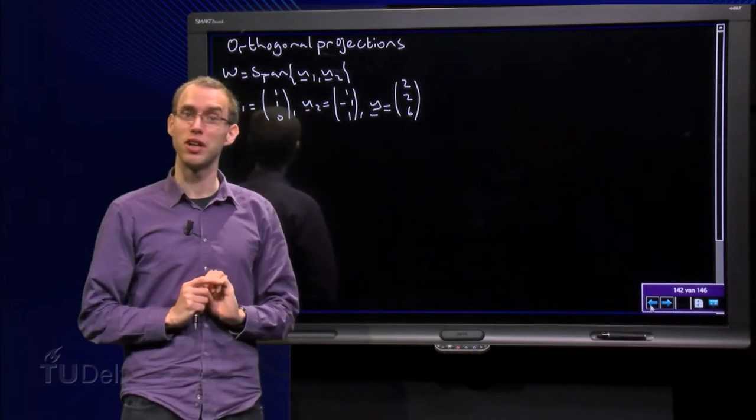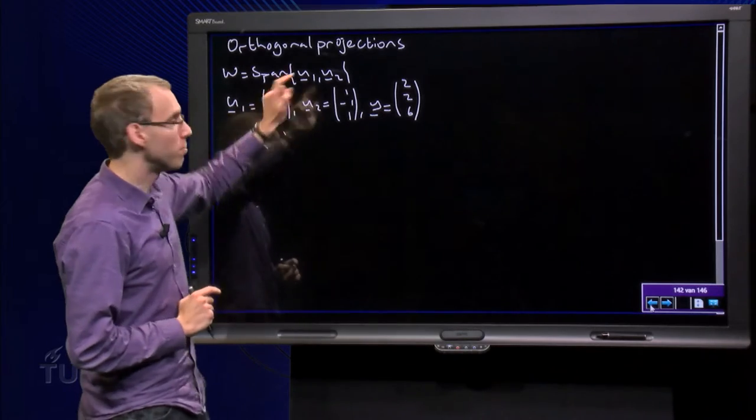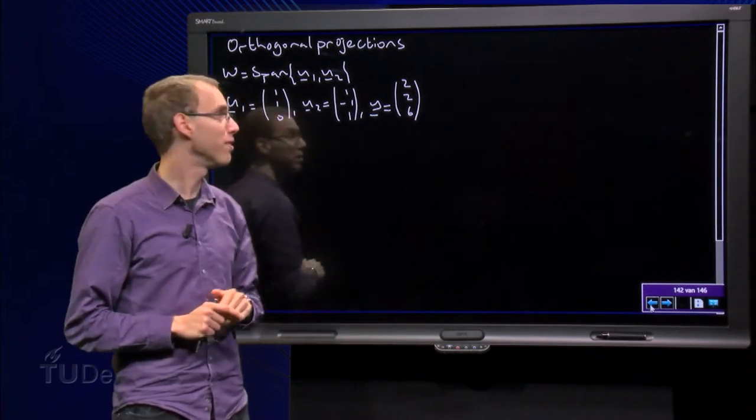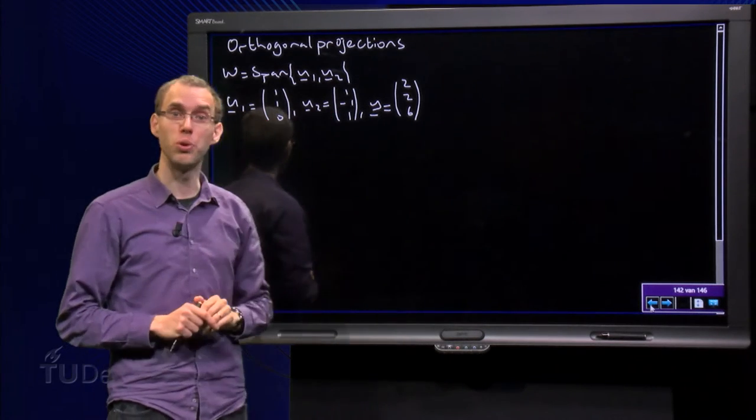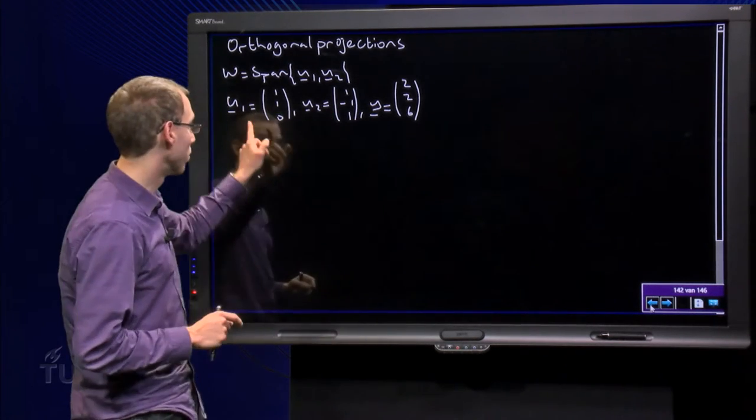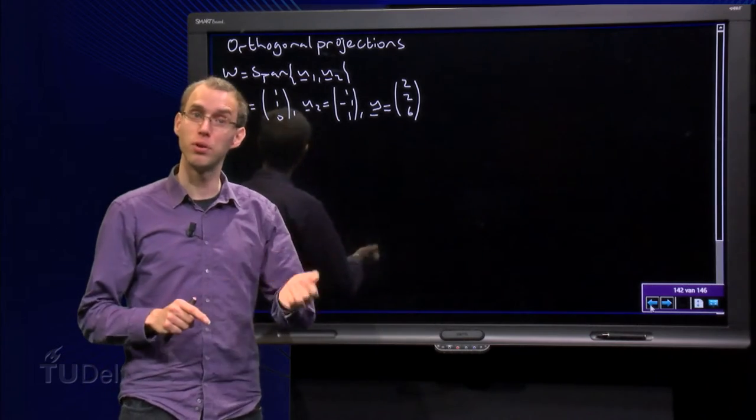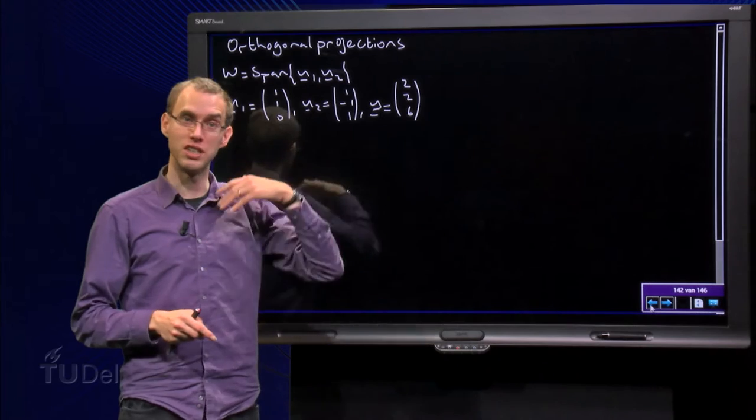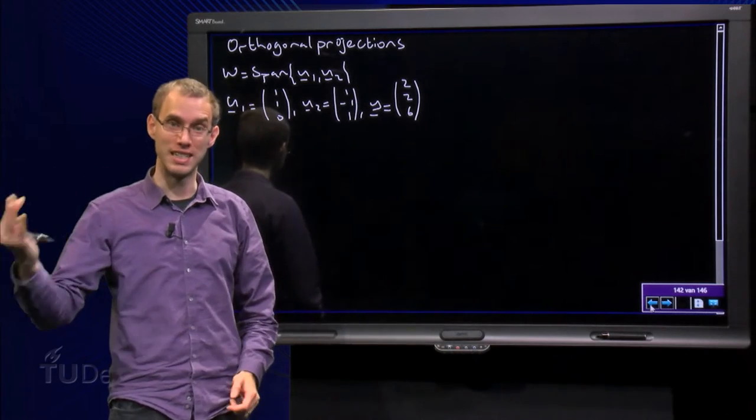So here we have an example: a subspace W spanned by two vectors, u1 and u2, explicitly given. u1 and u2 are orthogonal to each other, so they form an orthogonal basis of W, and I have some vector y. Then the question is: find y-hat and find z.